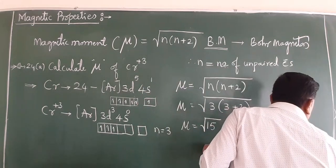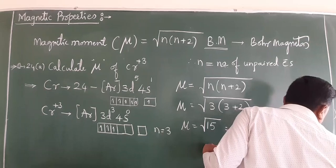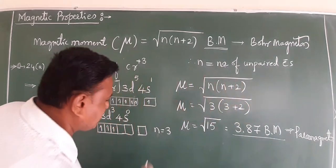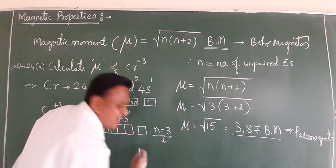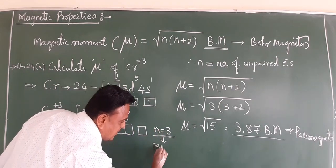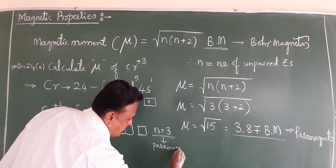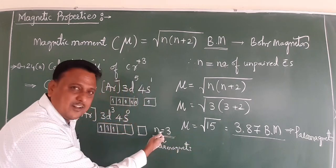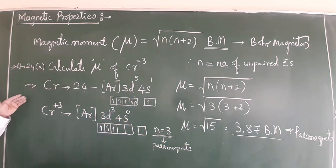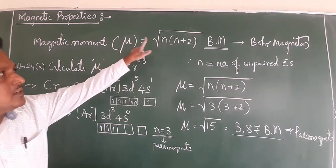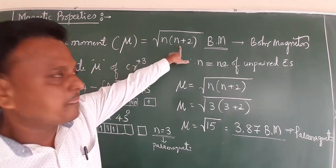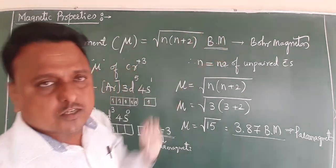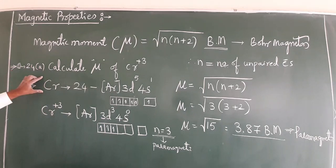If you get a fractional value or any result other than zero, the compound is paramagnetic. How do we know it's paramagnetic? Because we have 3 unpaired electrons. Due to 3 unpaired electrons, it is paramagnetic. If there are no unpaired electrons, it is diamagnetic. This is a simple calculation.